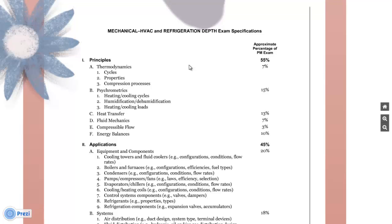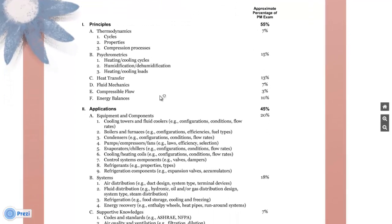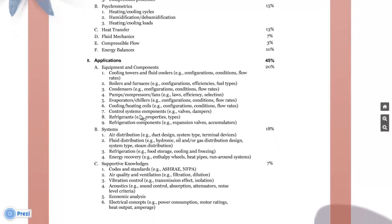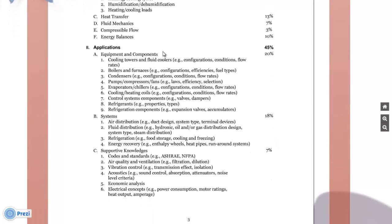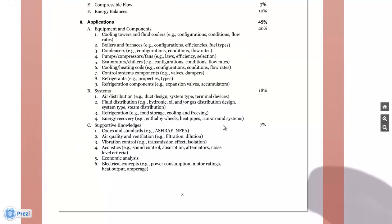The third page of the outline covers the depth session. This shows the HVAC and refrigeration depth exam specifications. As you can see, it covers topics like thermodynamics, psychrometrics, heat transfer, fluids, mechanical equipment and components like cooling towers and fluid coolers, mechanical systems like air distribution and fluid distribution, and finally support knowledge like codes and standards.